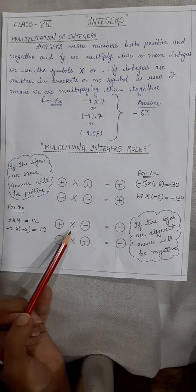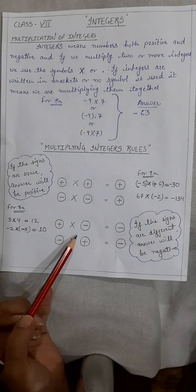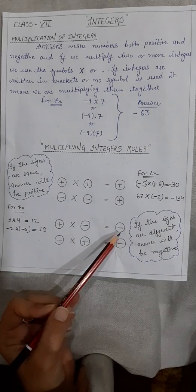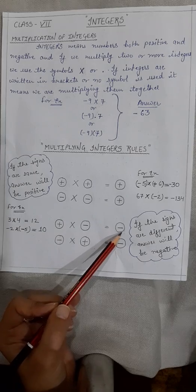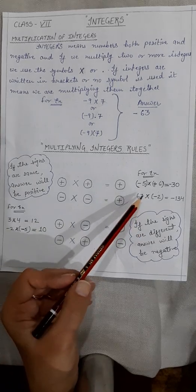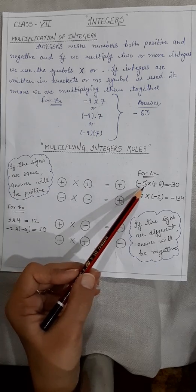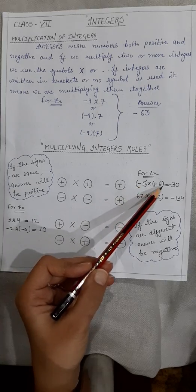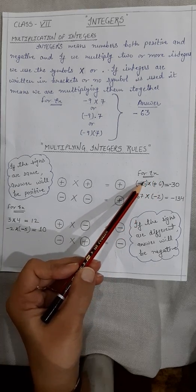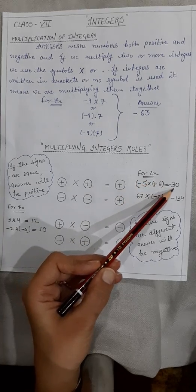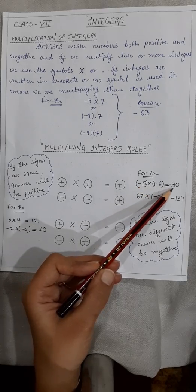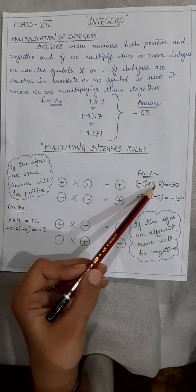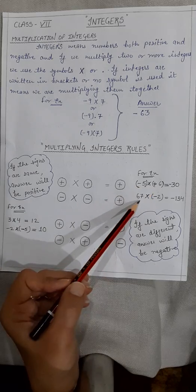Now, if you are multiplying two integers having different signs, then with the answer you have to assign the sign of subtraction, meaning the result is negative. For example, minus 5 into 6 — different signs — so first multiply: 5 into 6 is 30, and the sign will be negative.